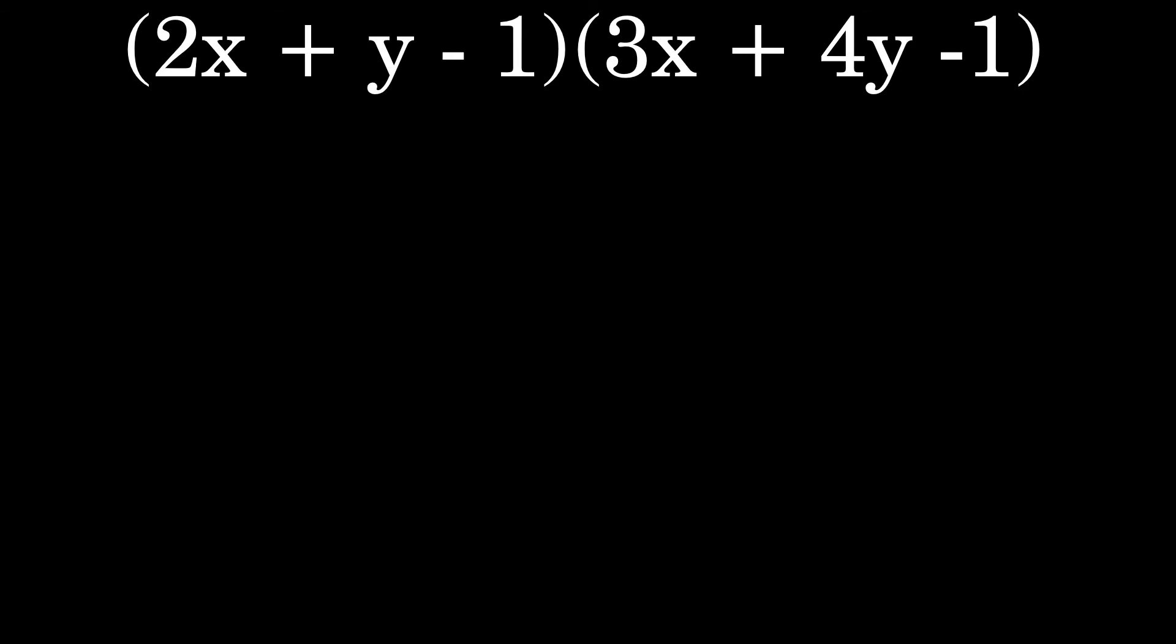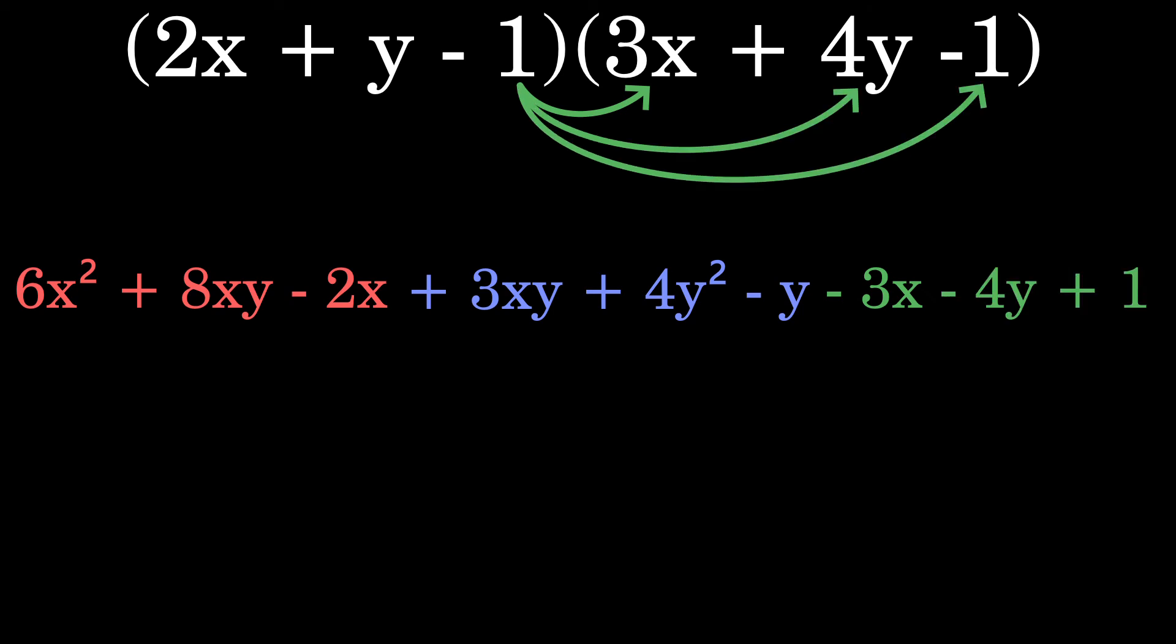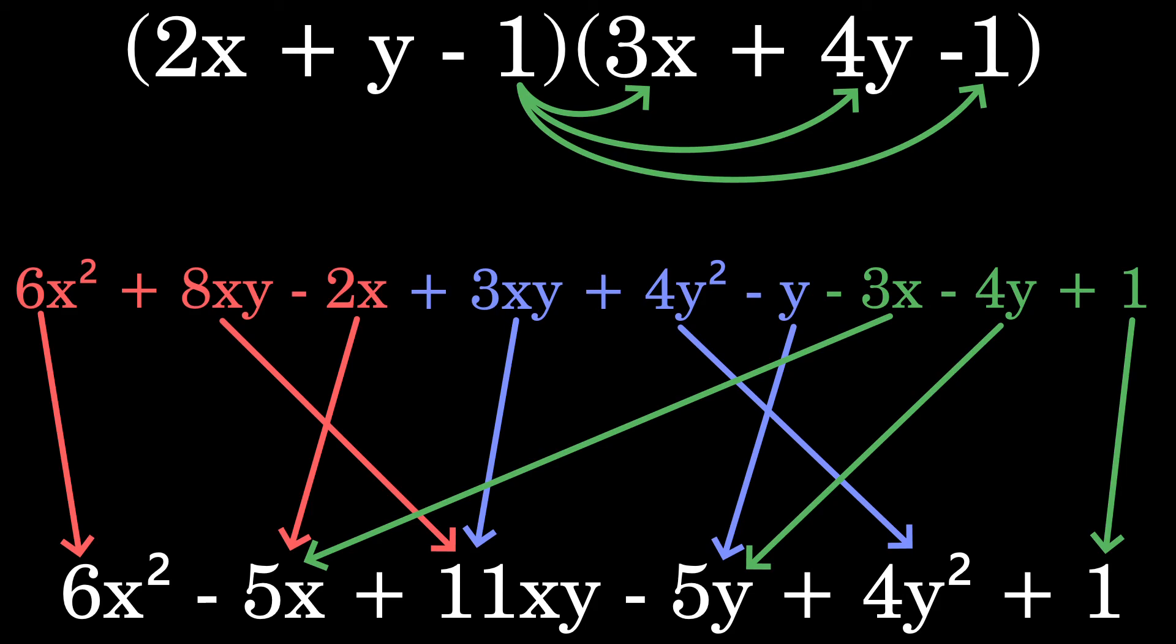In the end we multiply each of these terms to get 6x squared plus 8xy minus 2x plus 3xy plus 4y squared minus y minus 3x minus 4y plus 1. Remember you're multiplying positives and negatives here so your signs will change. Then you combine like terms, simplifying your expanded form into 6x squared minus 5x plus 11xy minus 5y plus 4y squared plus 1.